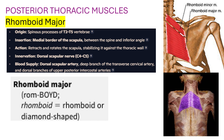Rhomboids are usually diamond-shaped. The bigger one is major, and the smaller one is minor. Rhomboid major origin is T2–T5; insertion is the medial border of the scapula between the spine and the inferior angle. It retracts and rotates the scapula, stabilizing it against the thoracic wall. Innervation: dorsal scapular nerve, C4–C5.